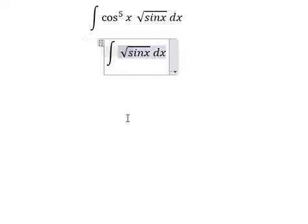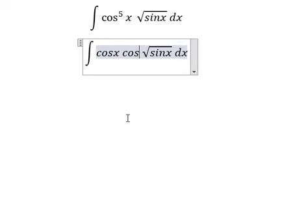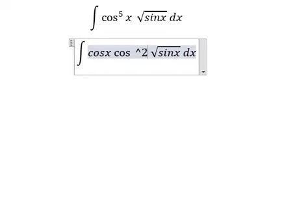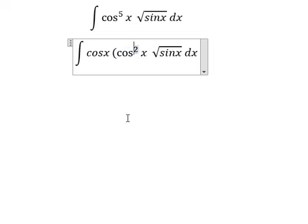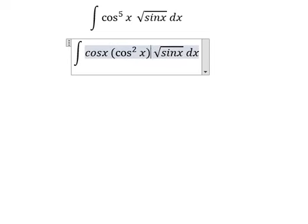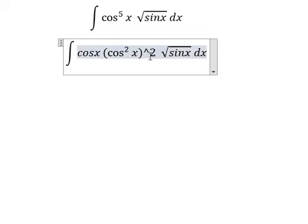This one we can put cos x and cos² x, everything to the power of 2. Because 2 with 2, we have 4. 4 with 1, we have 5.